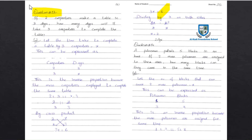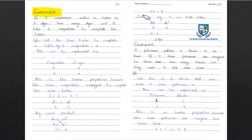Dividing by 3 on both sides to eliminate 3 and find x: 3x ÷ 3 = 6 ÷ 3, and 3 × 2 = 6, so x is equal to 2. This means if 2 carpenters complete a table in 3 days, then 3 carpenters will complete the table in 2 days.